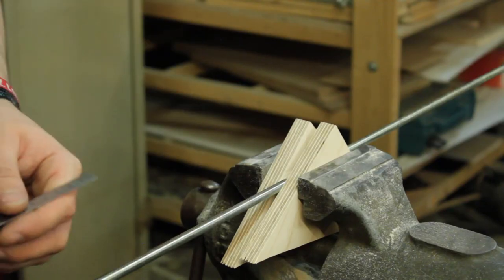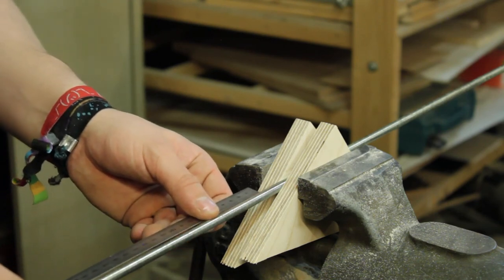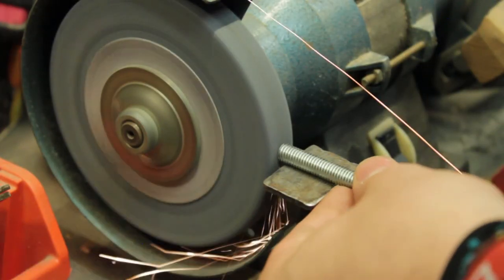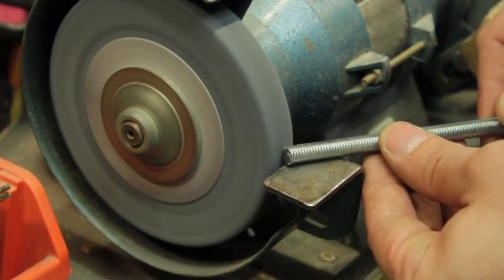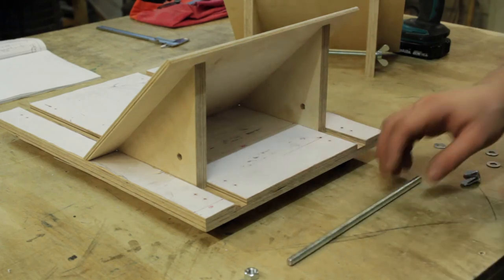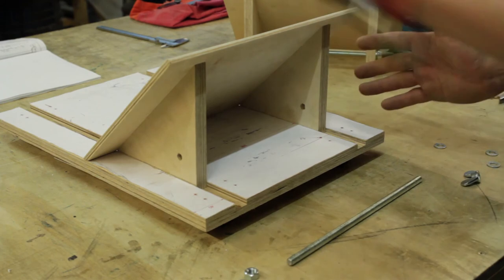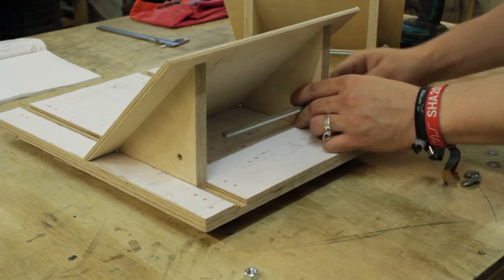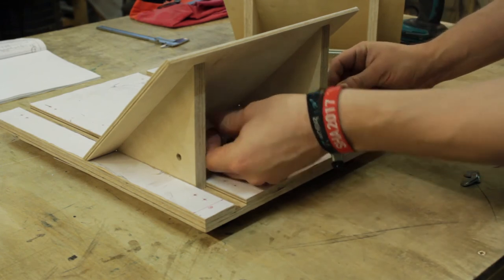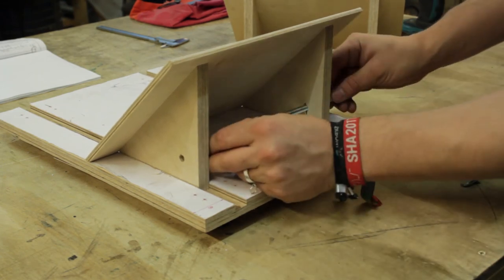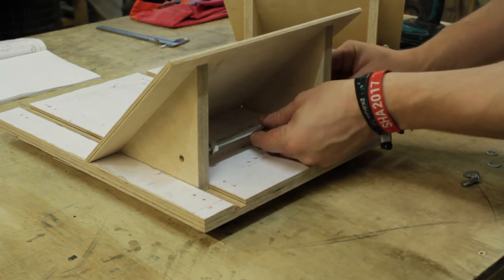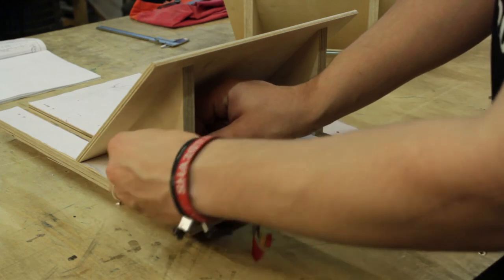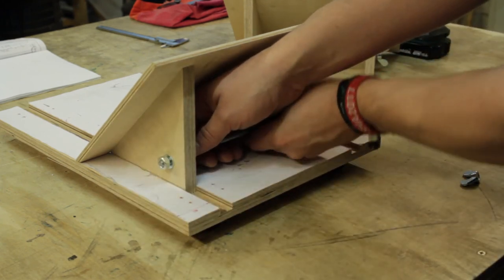We need two pieces of M8 threaded rod and the length of these are 238 millimeters. Let's assemble the fastening mechanism. This side is the front side of the book scanner. Here is the back side with the drivetrain. The rod goes through from the front. And now I'll put on a nut and a washer. And this I'll push through the other hole now, where I put on also a washer and a nut.